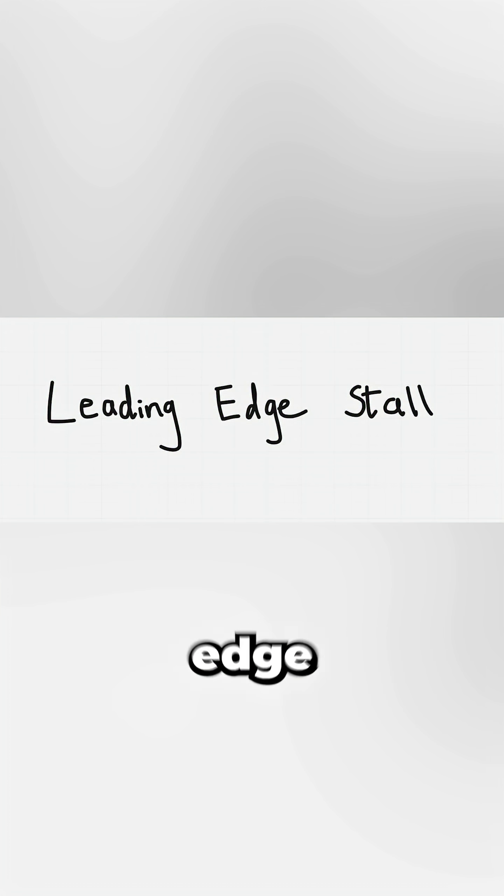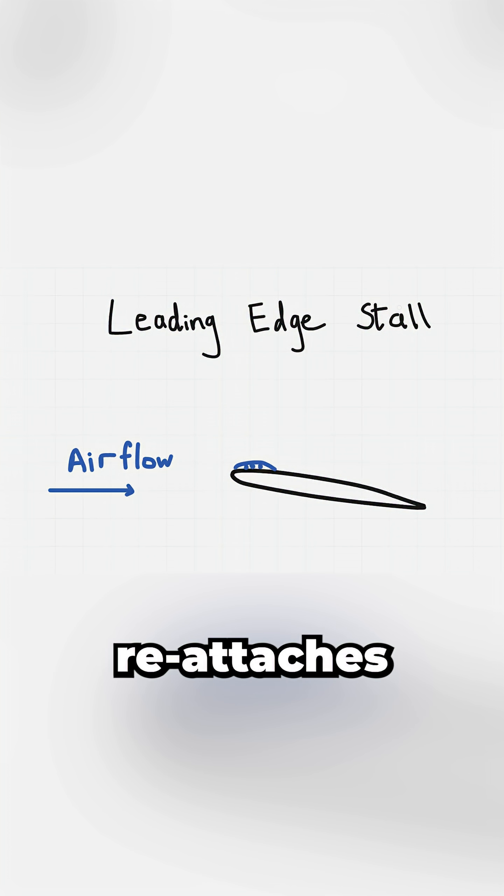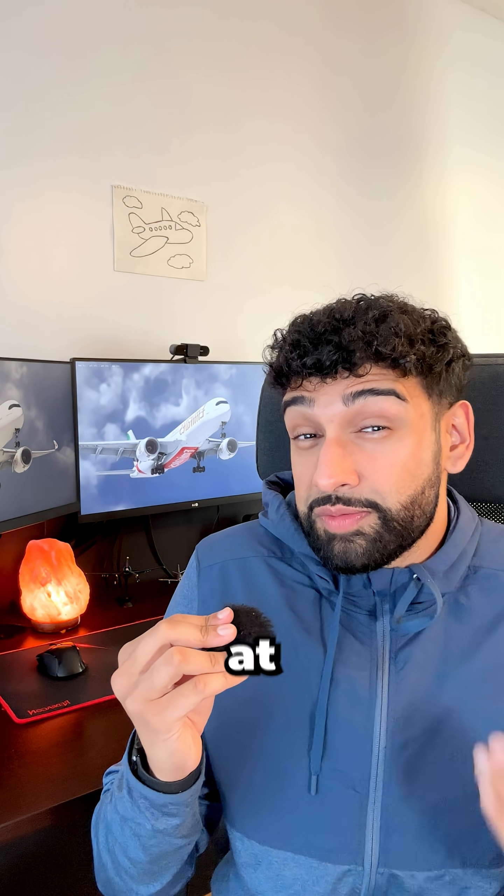The second is leading edge stall. Here, flow separates over the leading edge at low angles of attack but reattaches forming a bubble. So the effect at first is small.